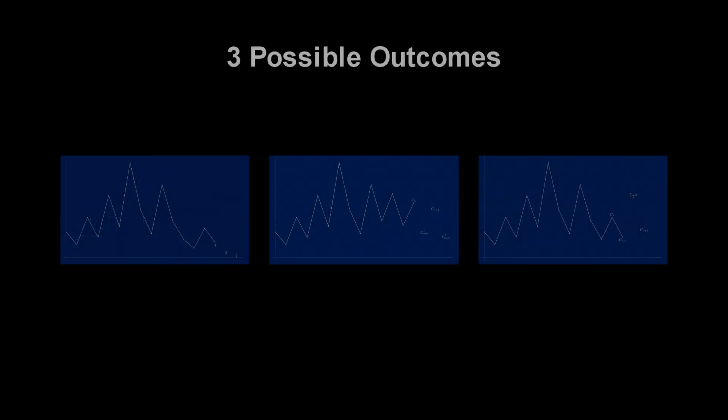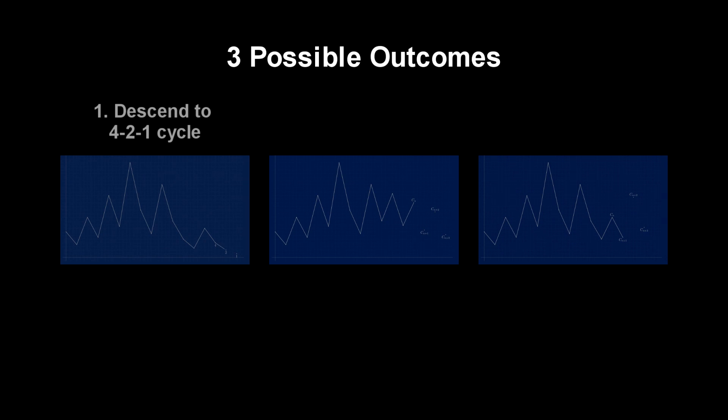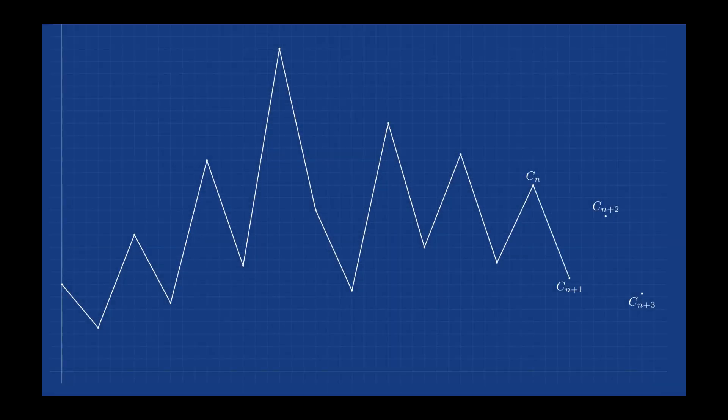There are 3 possible outcomes. The sequence eventually decreases to the 4-2-1 cycle. It enters another cycle, other than 4-2-1.